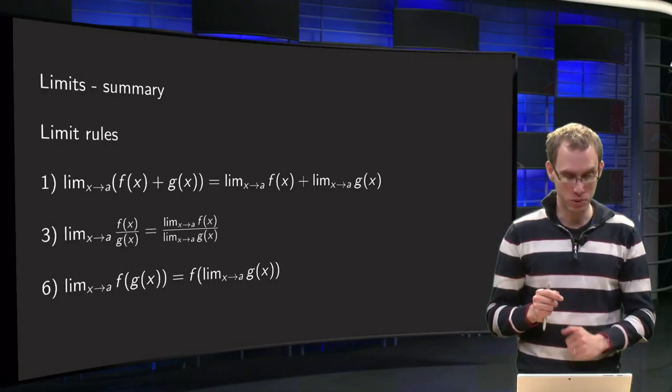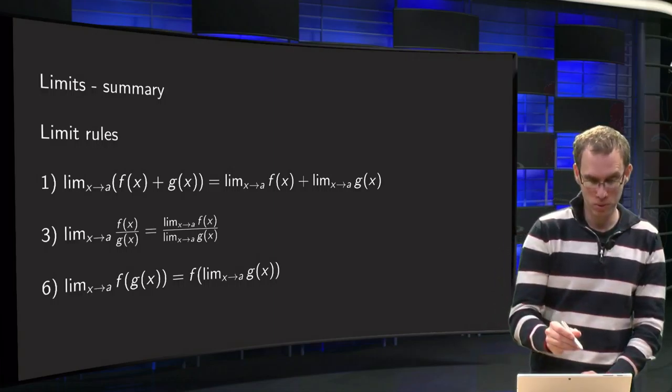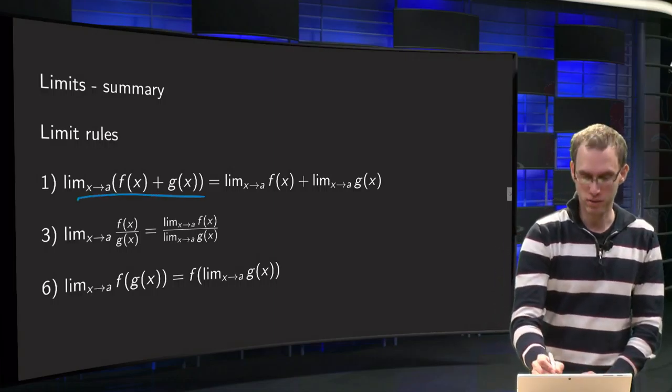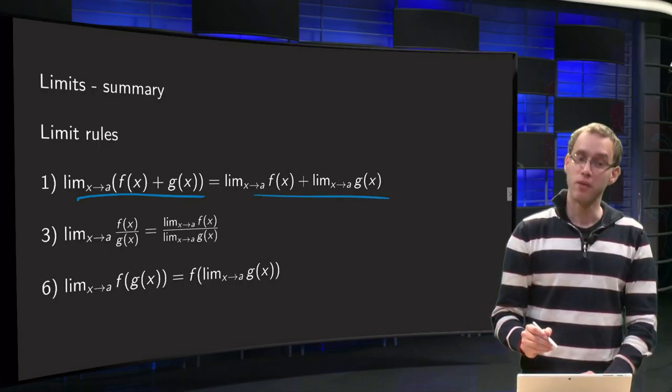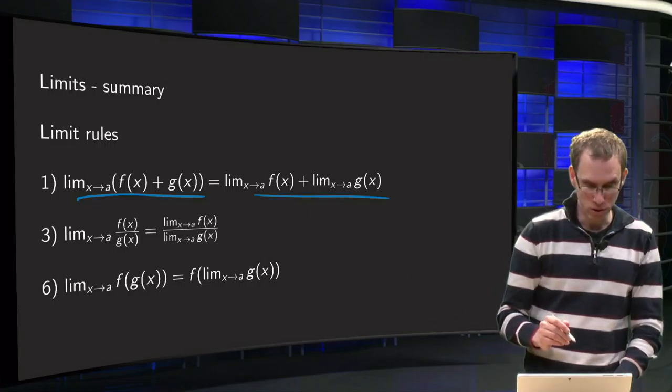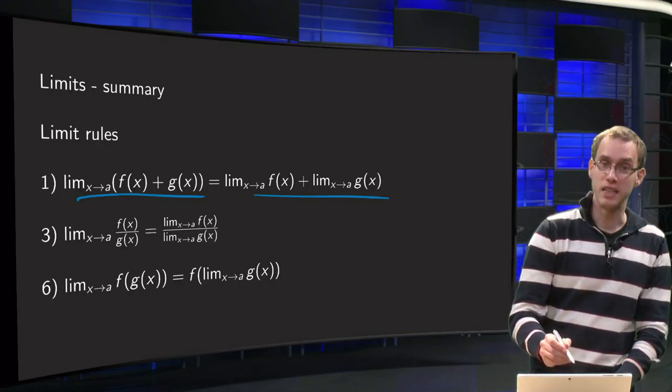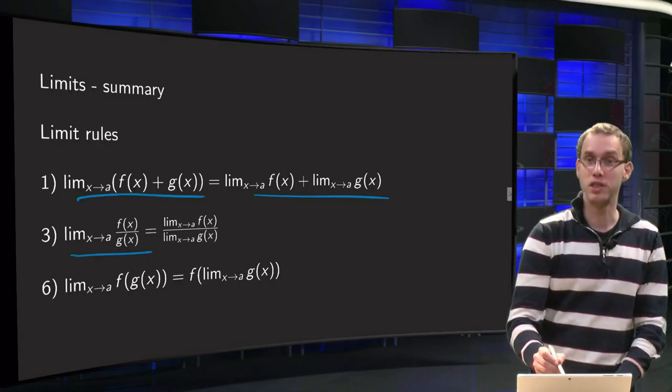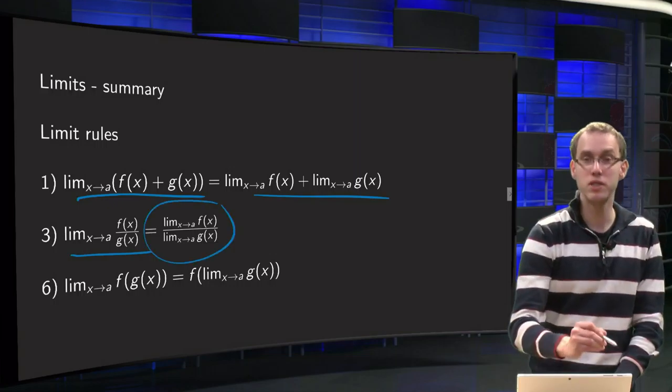First of all we have our limit rules, which is for example the sum rule, that the limit of a sum equals the sum of the limits. We have the product rule and the quotient rule, which says that the limit of a quotient equals the quotient of the limits.